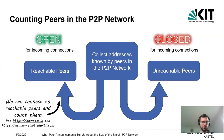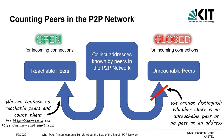However, this approach is not feasible for unreachable peers. If we have the address of a potential unreachable peer and we cannot connect to it, we do not know whether there is still an unreachable peer at this address, or whether the address is outdated and there is no peer anymore at this address.